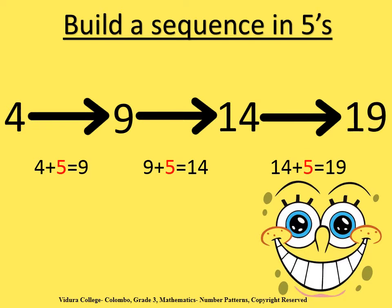Okay children, this is the way you build a number pattern in fives. Look at the first number given, which is 4. When you add 5 to 4, you will get the answer as 9. And for the second number, which is 9, when you add 5 to 9, you will get the answer as 14. And for 14, when you add 5, you will get the answer as 19. So the gap between this sequence is 5.